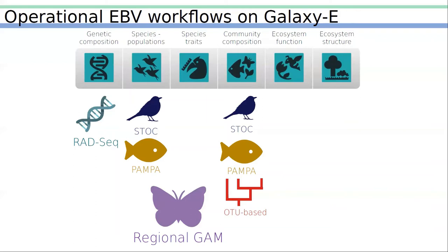First, the RADSEC workflow permits users to perform population genetics analysis, producing genetic composition EBV products. Then, the STOC and POMPA workflows permit production of species population and community composition EBV data products. The regional GAMM workflow is dedicated to performing population and species traits analysis on butterfly phenology data. Finally, there is a workflow based on operational taxonomic units available to study community composition.